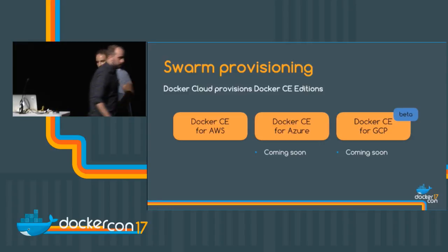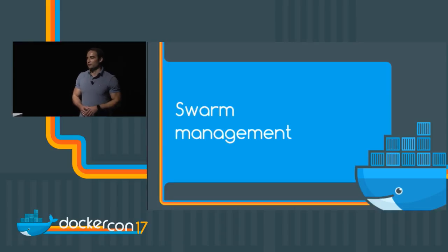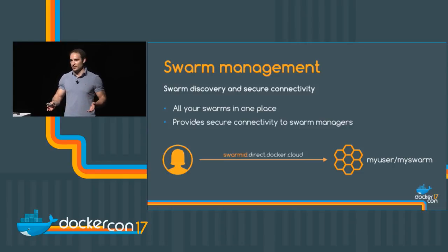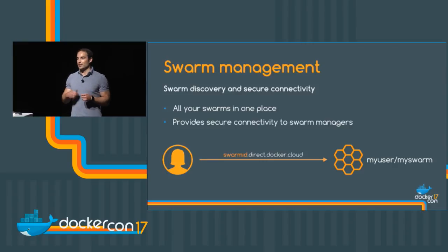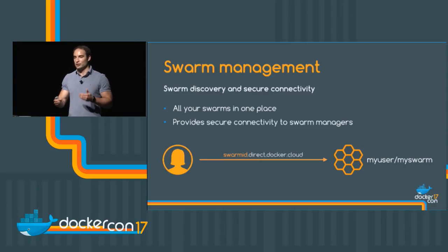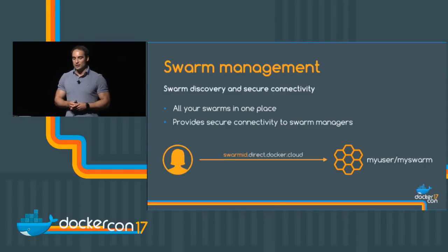Now that we have our swarm provisioned or registered with Docker Cloud, what does Docker Cloud provide? Why would I do that? The first thing is discovery — Docker Cloud becomes the single pane of glass where you can see all the swarms you've provisioned, registered, or have access to from other teams, all centralized in one place. We also provide secure connectivity to managers — for Docker for AWS, Docker Cloud stores the load balancer hostname internally, so when you use the swarm name it automatically resolves to the ELB. If managers come and go, we always keep pointers to the managers.